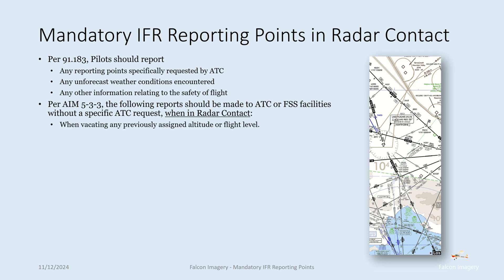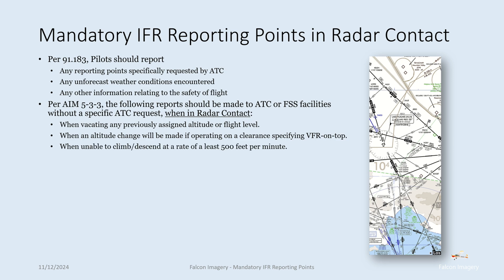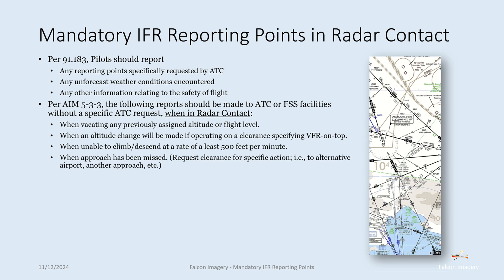Number one, when vacating any previously assigned altitude or flight level. When an altitude change will be made if operating on a clearance specifying VFR on top. When unable to climb or descend at a rate of at least 500 feet per minute. When an approach has been missed, request clearance for specific action, i.e., to an alternate airport or another approach. A change in the average true airspeed at cruising altitude when it varies by 5% or 10 knots from what is filed in the flight plan, whichever is greater.